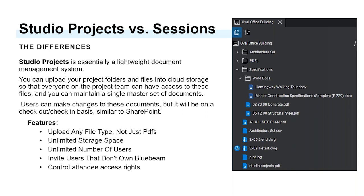By having files online, you can access them at any time — whether you're working from home, out in the field, or across multiple offices without using a VPN. There's unlimited storage, which is great. A lot of services like Dropbox or Google will notify you when you're running out of space and ask you to pay more. Bluebeam does not do that.